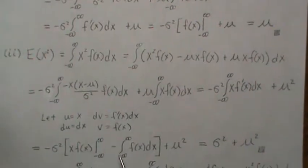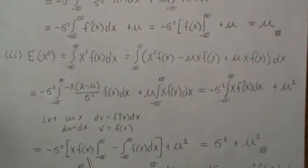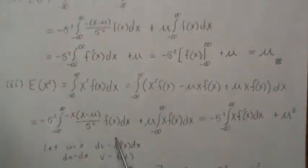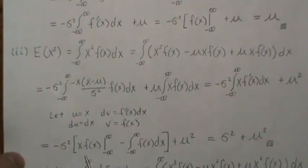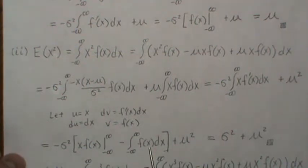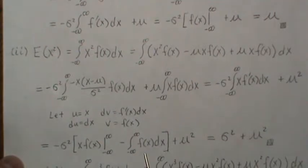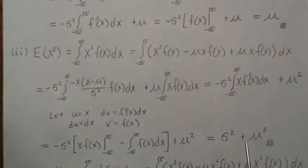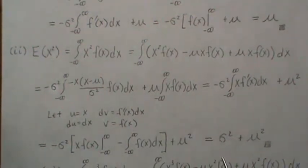We plug it in: uv is evaluated at its limits, and in the previous video we showed that this is zero. Then we have v·du, which is this part — don't forget the minus one — and then you take it times minus σ², giving σ². Don't forget the μ, and so that's the second moment of a normal distribution: μ² + σ².